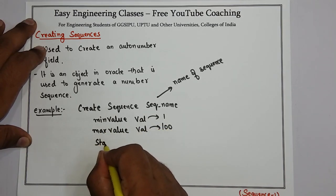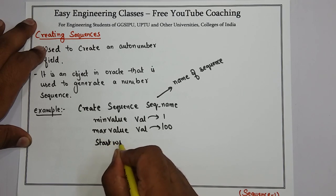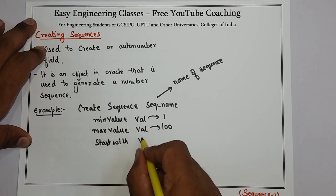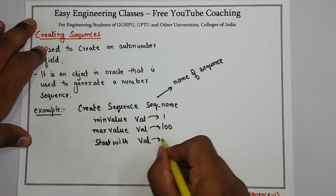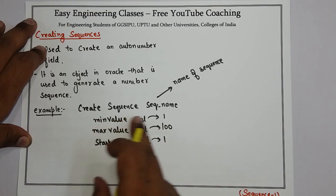Then start with parameter. It is the one from which the sequence will start. I am giving it as one since my minimum value is also one.